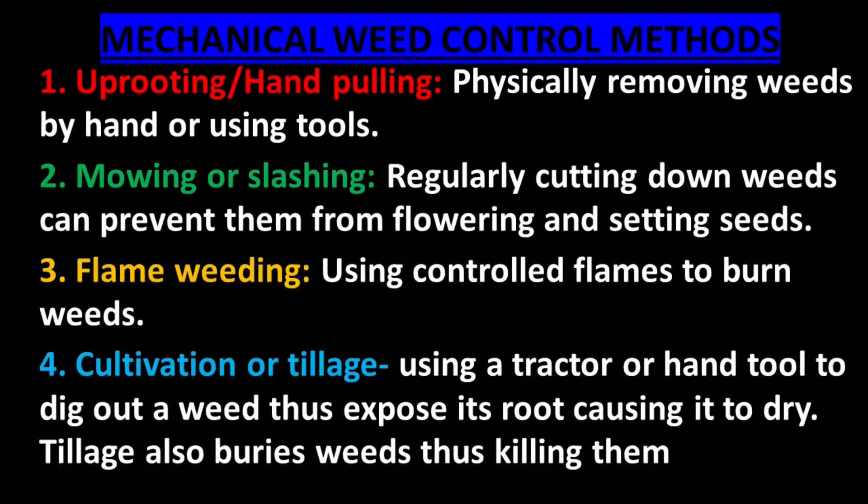Flame weeding involves using controlled flames to burn weeds, thus effectively controlling them. Cultivation or tillage is another method of mechanical weed control that involves using a tractor or a hand tool to dig out weeds, thus exposing their roots and causing them to dry out.